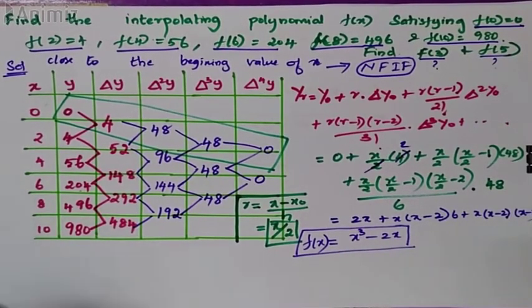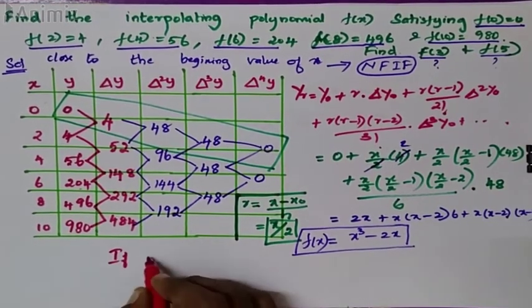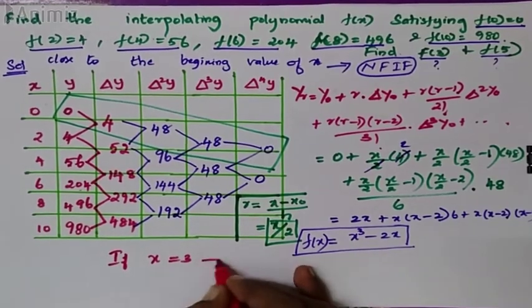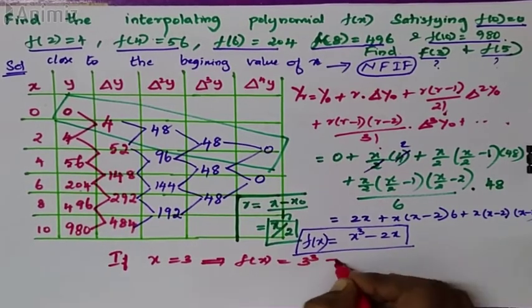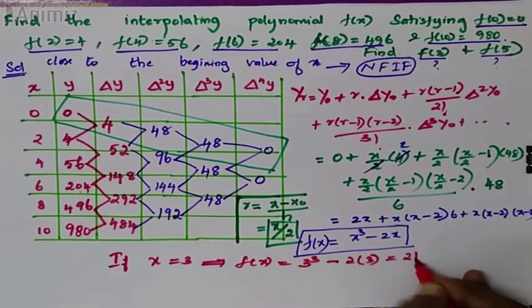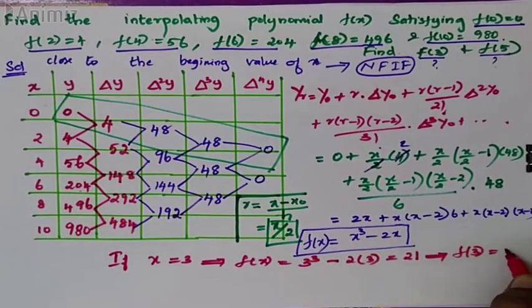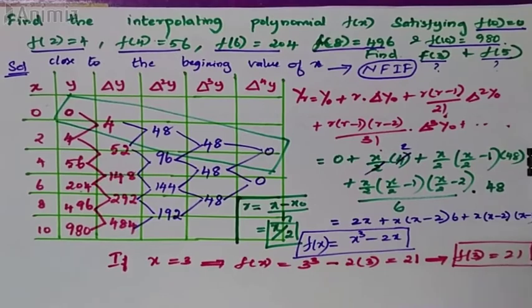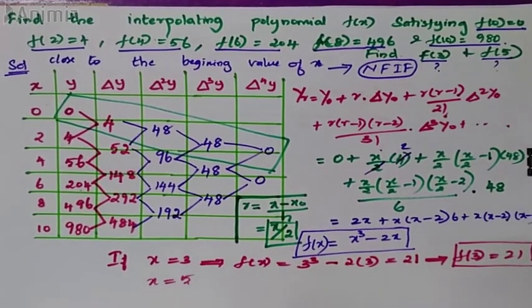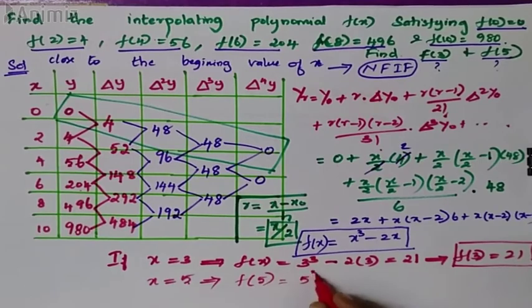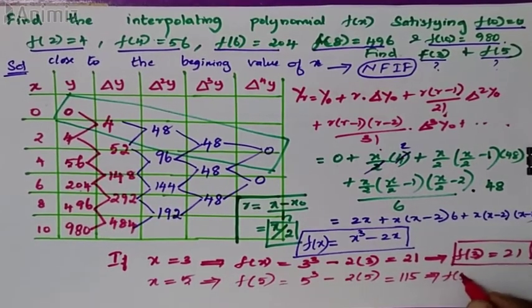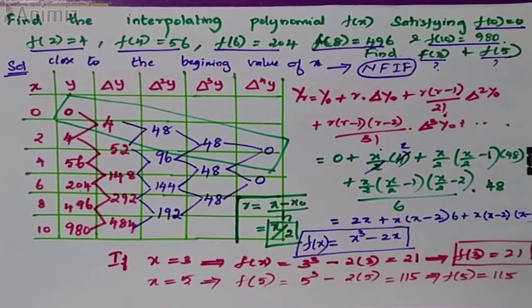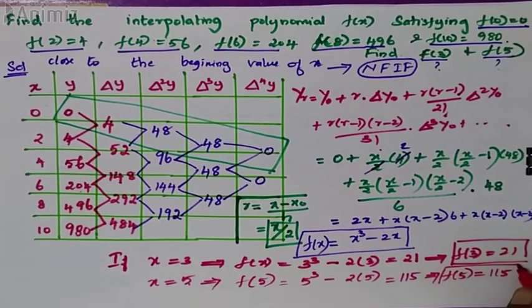Now if x is equal to 3, then f of 3 equals 3 cube minus 2 into 3, that is 21. If x is equal to 5, then f of 5 is equal to 5 cube minus 2 into 5, that is equal to 115. So f of 3 is 21 and f of 5 is 115.